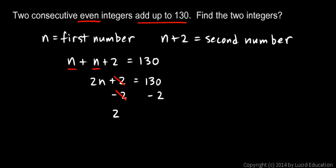That leaves me with 2n on the left and 128 on the right. So now I divide each side by 2.